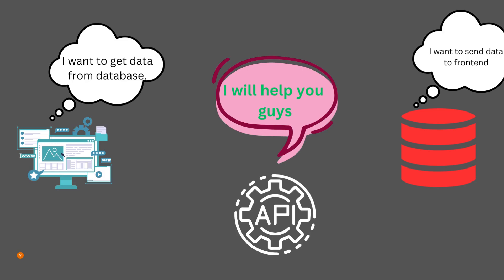In this video we will be trying to understand about APIs. Imagine there are two pieces of software and they want to communicate with each other. An API sits in the middle and helps in the communication. You can imagine an API as a translator. The full form of API is Application Programming Interface — it is an interface that helps in communication of two pieces of software.